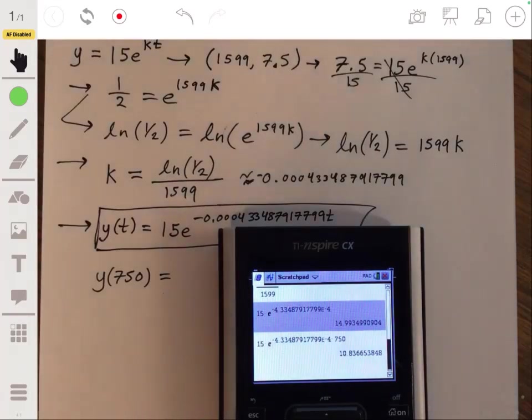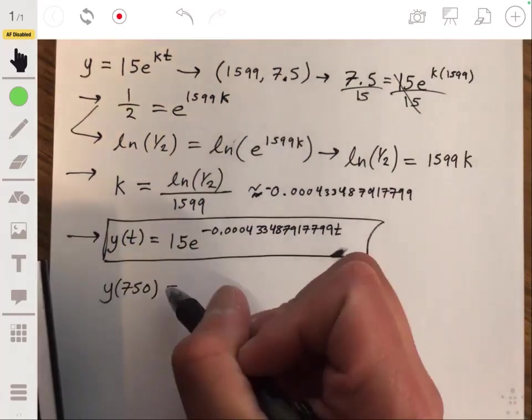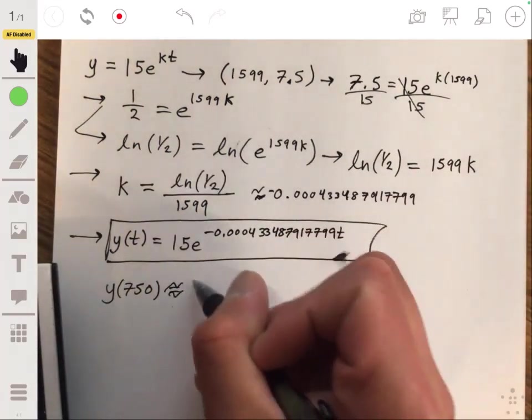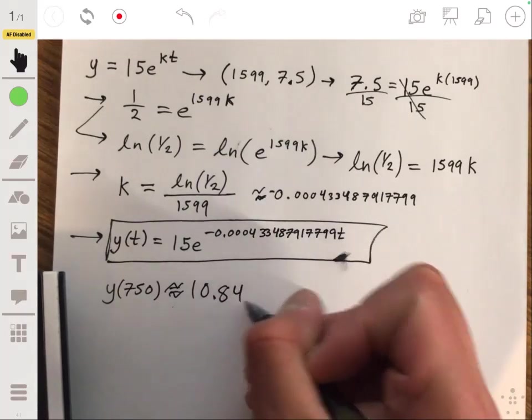Let me do that again. Negative 0.000433487917799 times 750. There we go. And there we get our answer, 10.8366. About 10.84 grams, you can say.